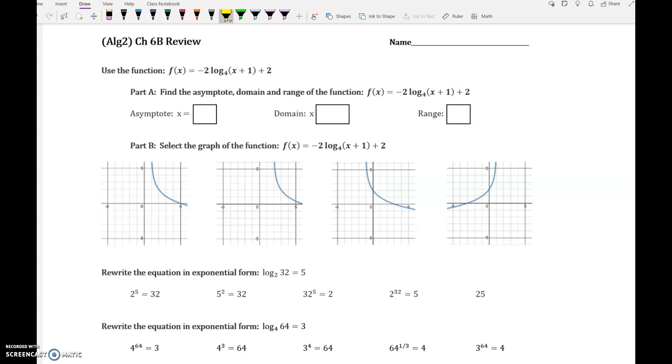The asymptote of a log function is a vertical line, so the side-to-side movement is what really affects the asymptote. So because this graph moves left 1, the asymptote is at x equals negative 1.